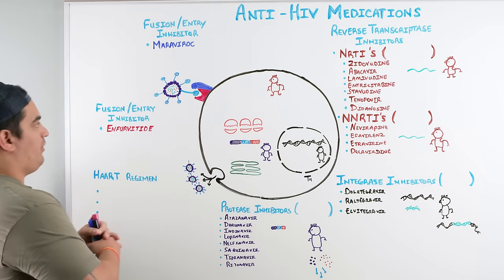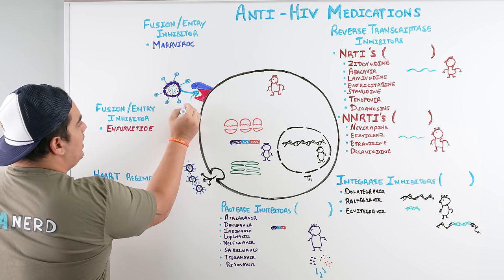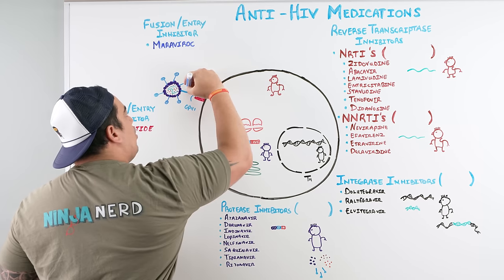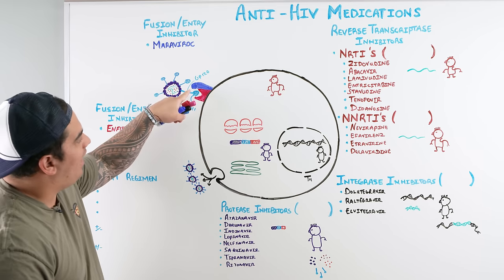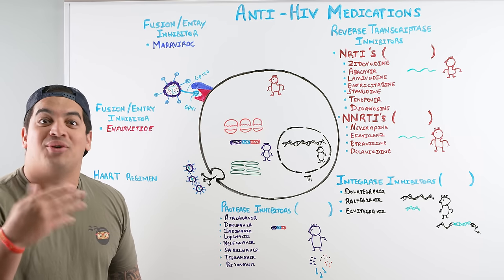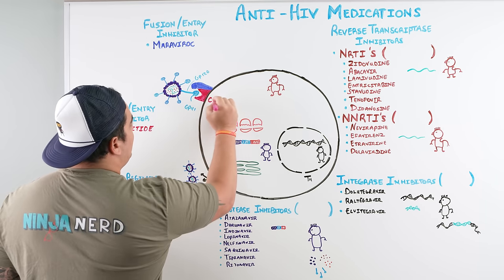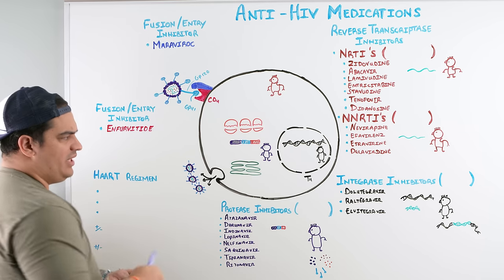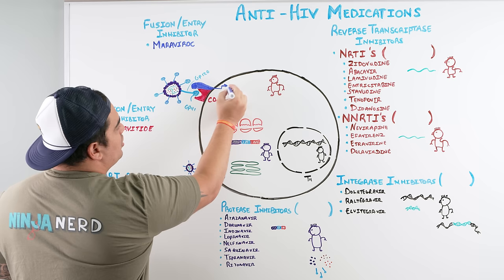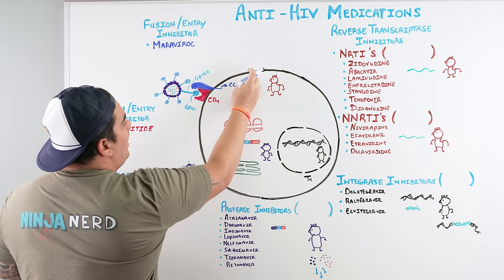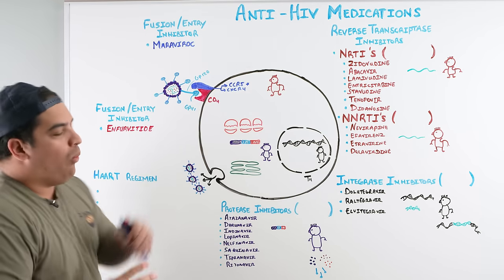HIV uses two key surface proteins: gp41 (the small point protein) and gp120 (the longer stick protein). These bind to host cell receptors — gp41 binds with the CD4 protein, and gp120 binds with co-receptors on T-helper cells. The two important co-receptors are CCR5 (the major one to remember) and CXCR4.